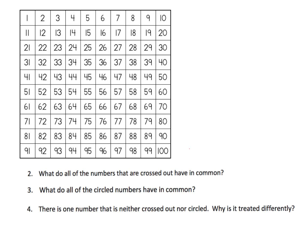We have a grid from 1 to 100. Nothing magic about the fact that we chose 1 to 100 — we could have chosen 0 to 99 or 1 to 200. We just have a collection of numbers. We're going to follow the process that Eratosthenes used for identifying primes, and we're going to begin by highlighting the 1 by shading it in red.